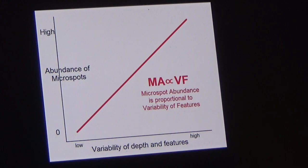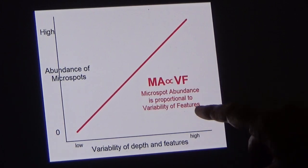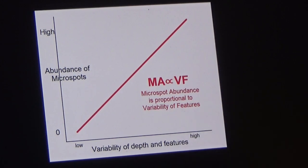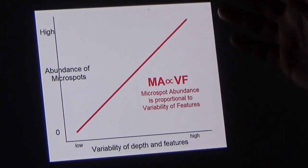It's hard to put a specific number on that because it would depend on the size of the area and lots of other things. But the truth is that micro spot abundance is proportional to the variability of features — in other words, the more variability in depth, in the water in the area, and also the types of cover elements and structure elements on the bottom, the more micro spots you're likely to find.